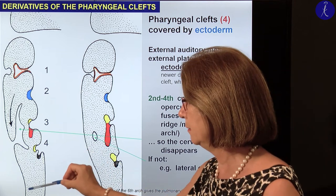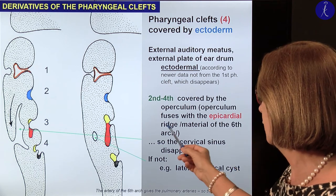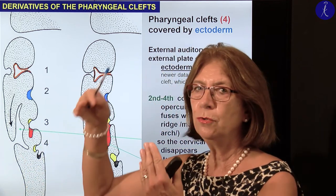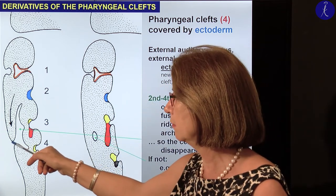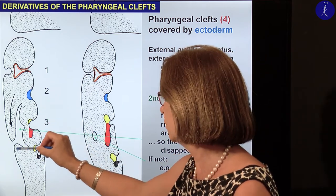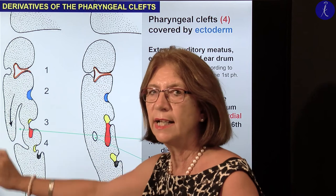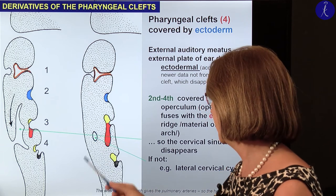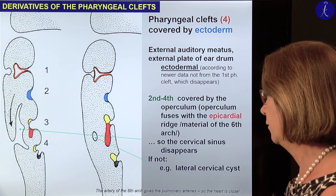From the sixth pharyngeal arch here, we have a so-called epicardial ridge going upward. These two ridges grow against each other and get close to each other. This territory, which we call the cervical sinus, will get smaller and smaller and at the end it disappears. It should disappear fully — if it doesn't, a cervical cyst may remain in the neck territory, and that's already a small malformation.